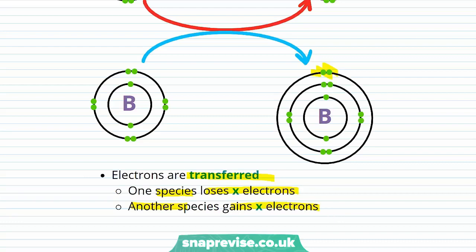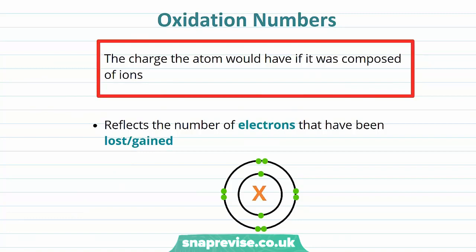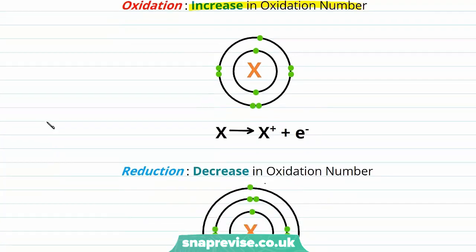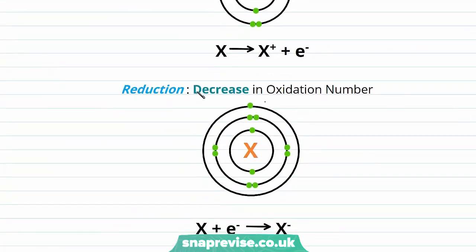Oxidation numbers represent the charge the atom would have if it were composed of ions, reflecting the number of electrons lost or gained. When element X is oxidized, we see an increase in the oxidation number — it has lost an electron. When X is reduced, we see a decrease in the oxidation number — it has gained an electron.